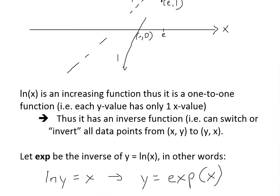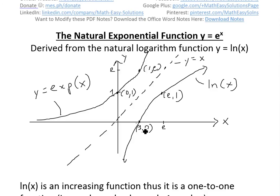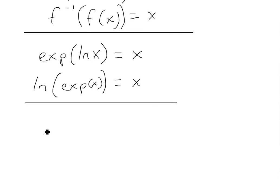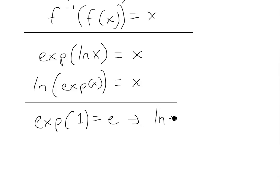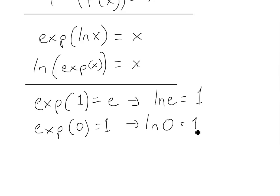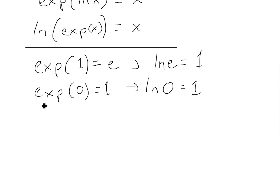From our graph, we also have specific requirements for the inverse function. The point (1, 0) on ln becomes (0, 1), and the point (e, 1) becomes (1, e). So exp(1) must equal e — because ln(e) equals 1, and we just switch it around to get 1 and e. We also need exp(0) to equal 1, because ln(1) equals 0.